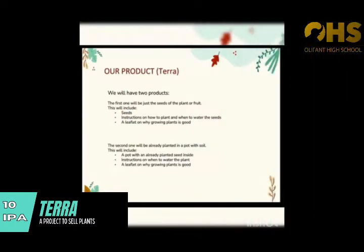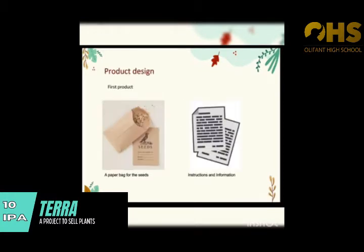Our product idea. We have two products. The first one will be just the seeds of the plant or fruit. It will include seeds, instructions on how to plant and when to water the seed, and a leaflet on why growing plants is good. This is our product design — this is our first product. The seeds will be inside a paper bag or an envelope.